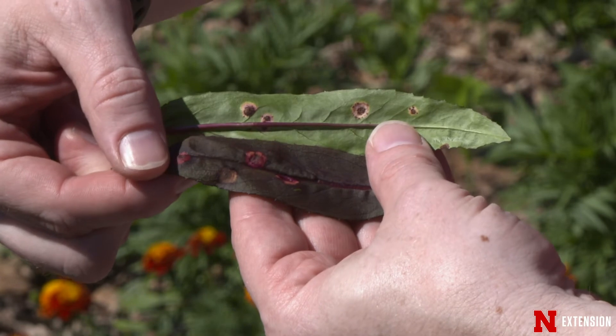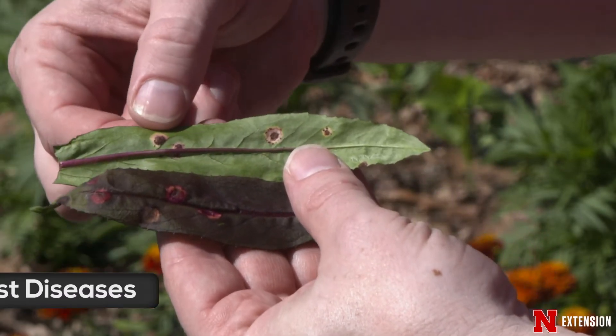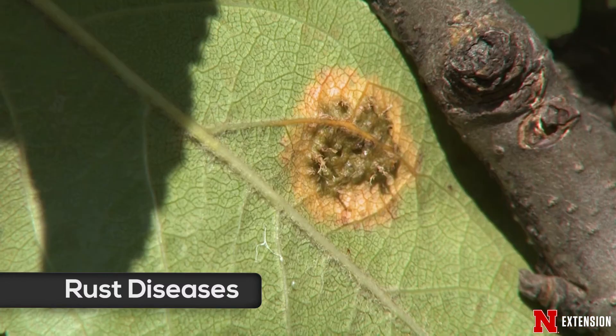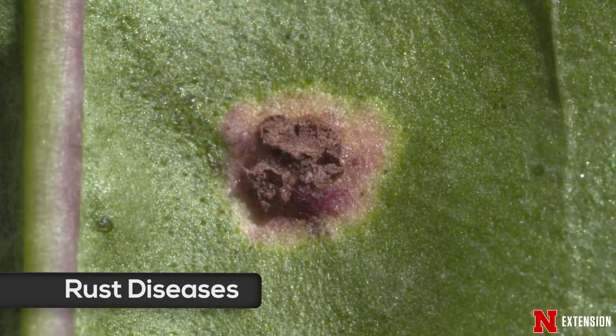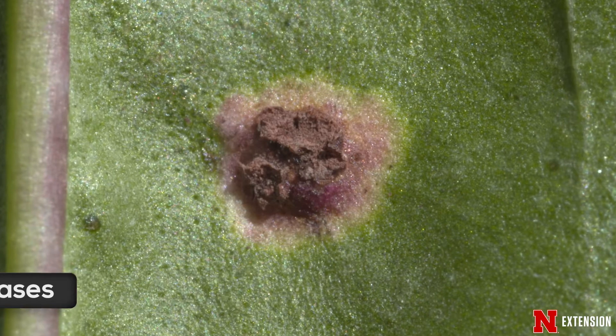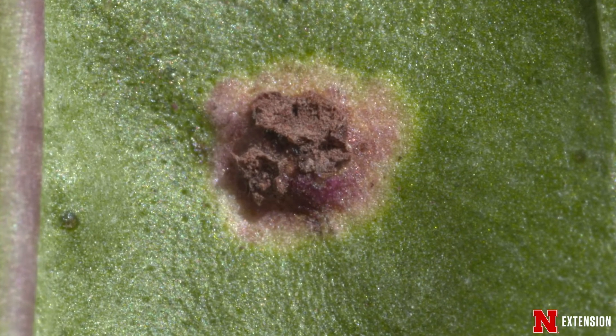Other things to look at are colors — not only the color on the top of the leaf, but what does it look like on the underside as well. Certain pathogens may form structures on the underside of our leaves. With rust diseases, you look at the bottom of the leaf and you'll see some kind of fingers or tendrils coming down underneath those lesions, and those are diagnostic for the rust fungus.